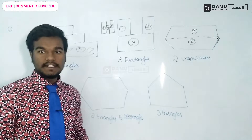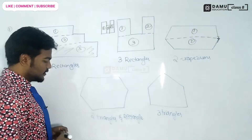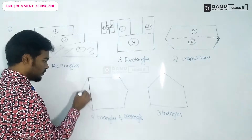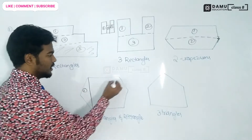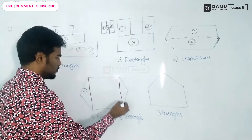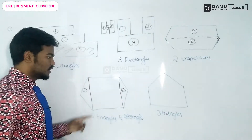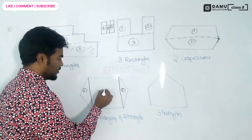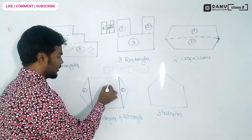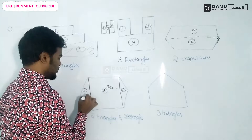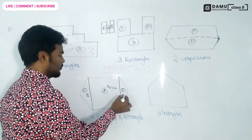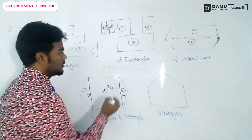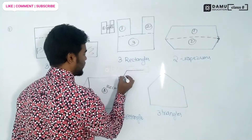Next one: two triangles and one rectangle. You can make two triangles like this — one, then two. So these are two triangles, and then one rectangle. This is the rectangle, and this is the triangle. You can also make another shape by dividing it like this.